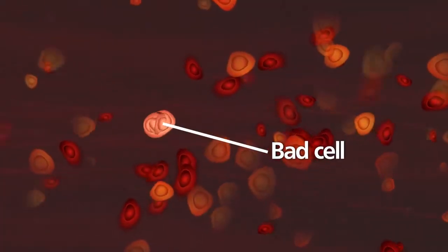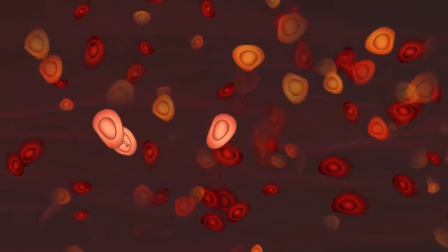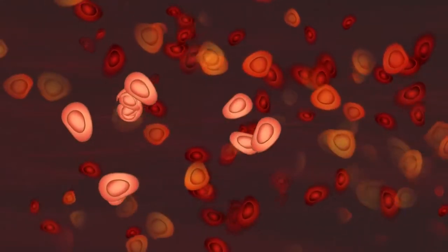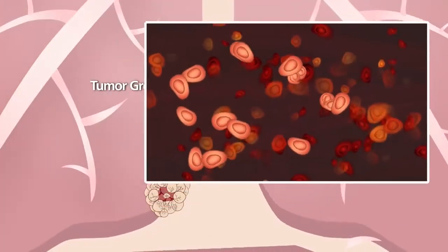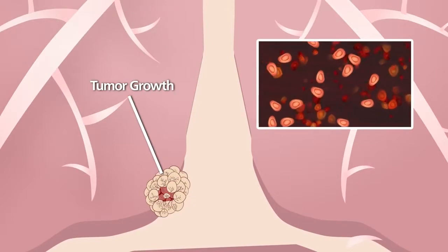This genetic damage can change human DNA in ways that cause cells to divide uncontrollably. Instead of dying a natural cell death, these cells continue to replicate and eventually form tumors in the lung or lining of the lung.